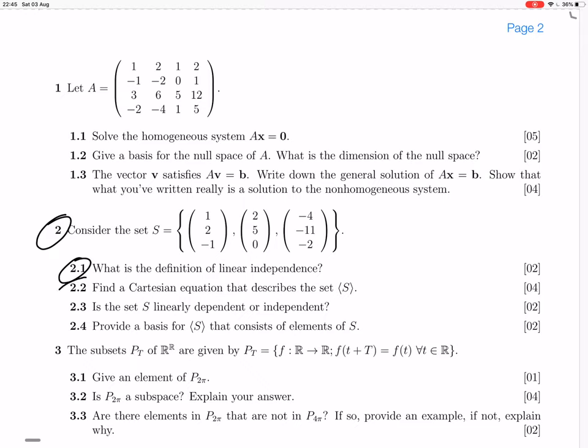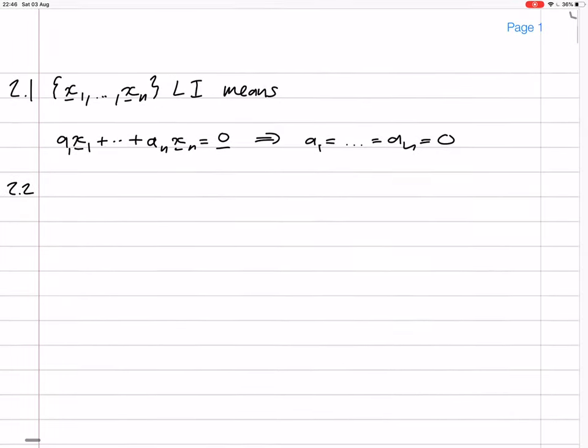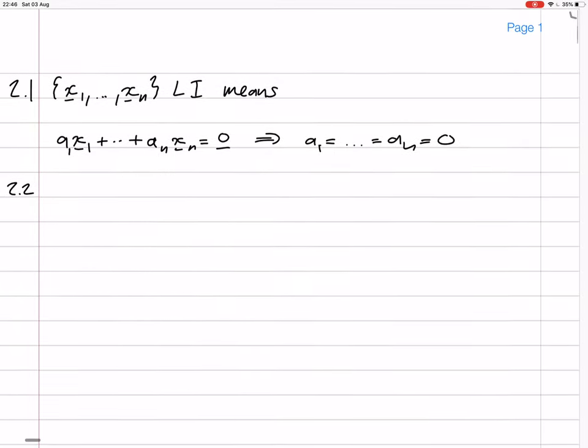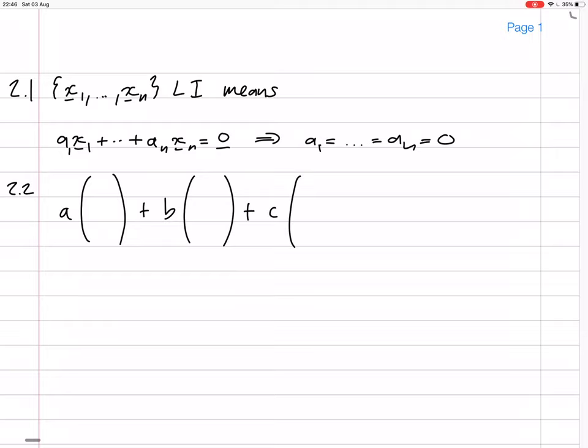Okay, 2.2. Find a Cartesian equation that describes the set S, the set generated by S. Okay, so we're going to set up a linear combination of those three vectors, set it equal to x, y, z, and then we're going to do a row reduction and see what happens. One of the rows will come to zero, we'll get a little Cartesian equation, I expect.